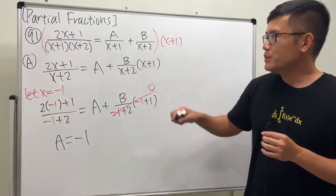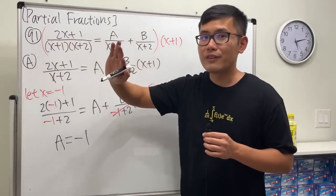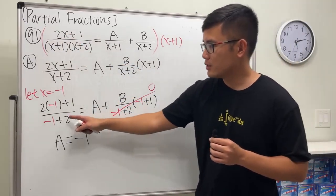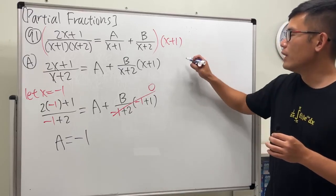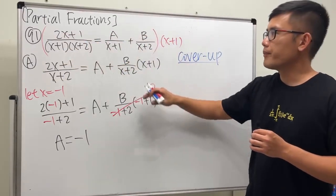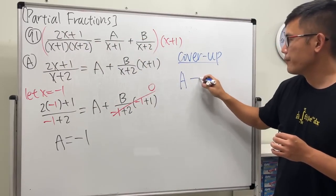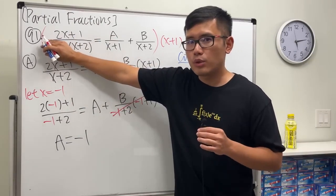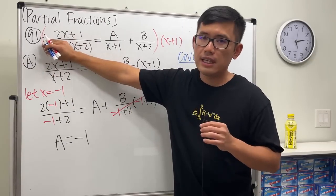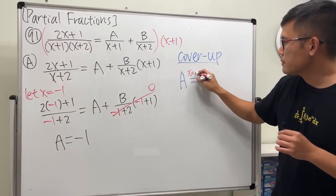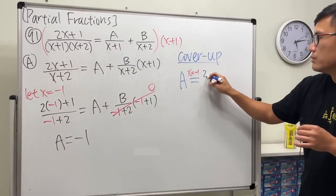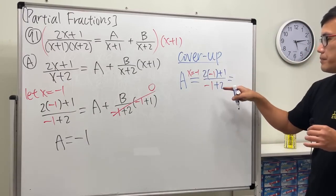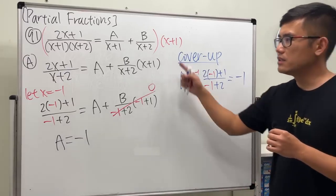In fact, you're going to notice we don't have to go through this every single time, because we can actually just look at this and do the so-called cover-up method — just cover up the same denominator and then plug in x equal to negative 1. I'll do the same one in blue. Look at this equation: I want to solve a. A has x plus 1 for the denominator, so we go back to the original, cover up the same denominator, make x plus 1 equal to zero, meaning x has to be negative 1. We put negative 1 here and here: 2 times negative 1 plus 1 over negative 1 plus 2, that's negative 1. Done.